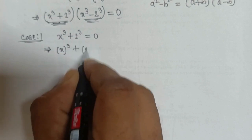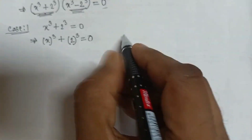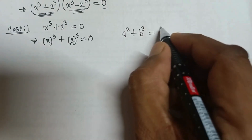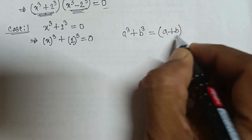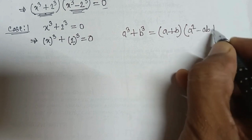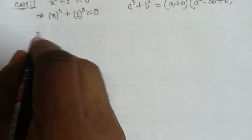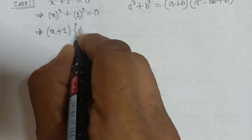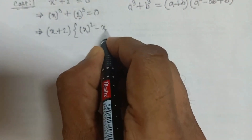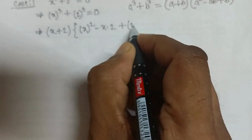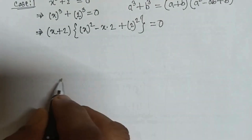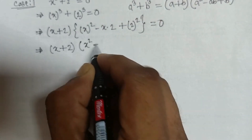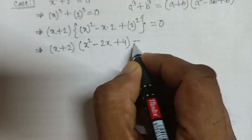We can write x to the power cube plus 2 to the power cube equals 0. Using the formula a cubed plus b cubed equals a plus b into a squared minus ab plus b squared, we apply it here to get x plus 2 into x squared minus x times 2 plus 2 squared equals 0.